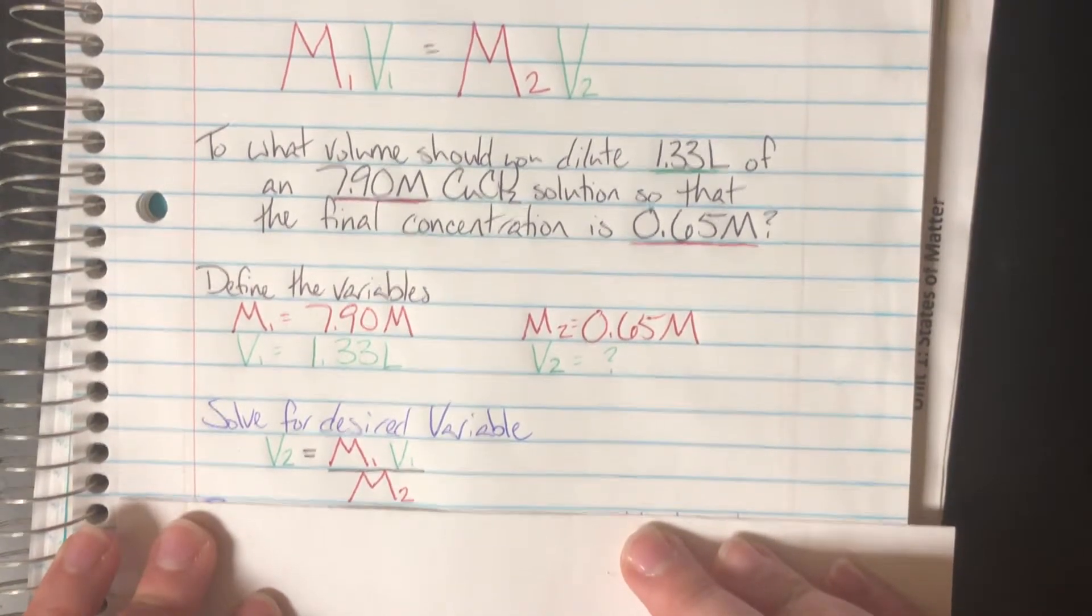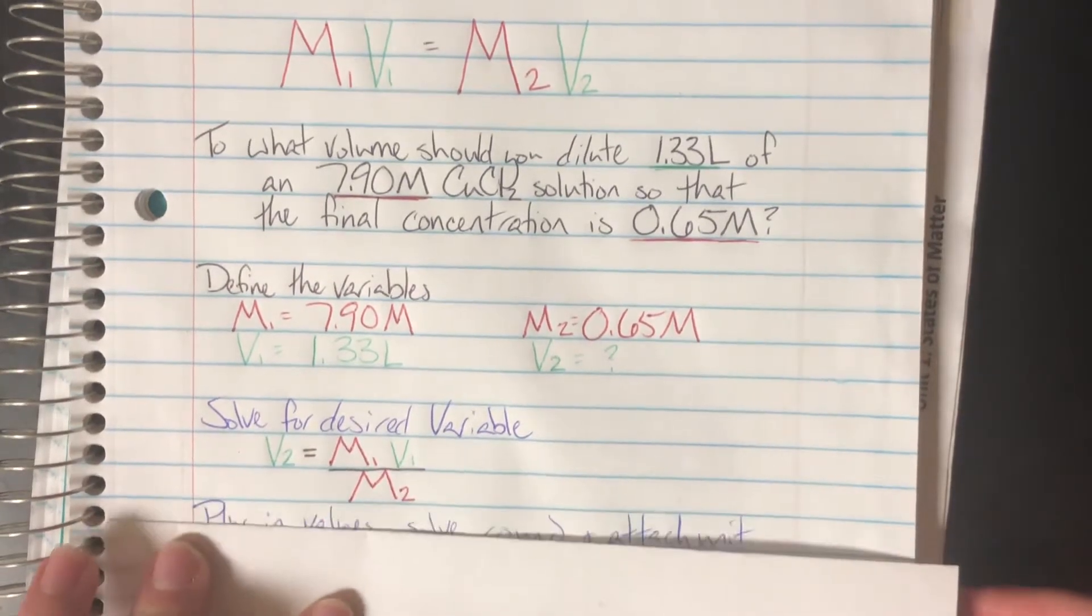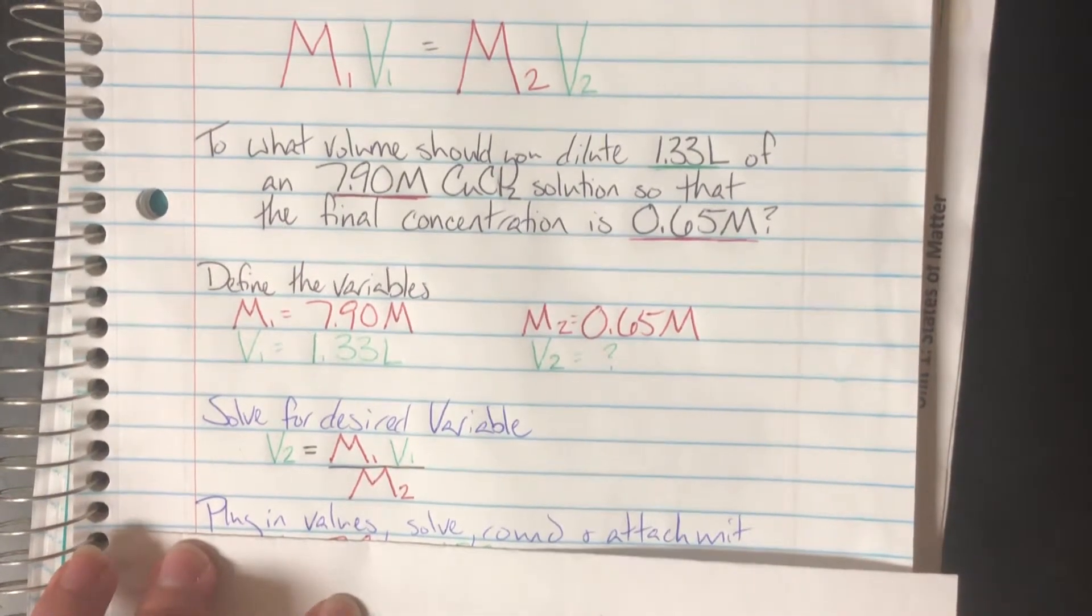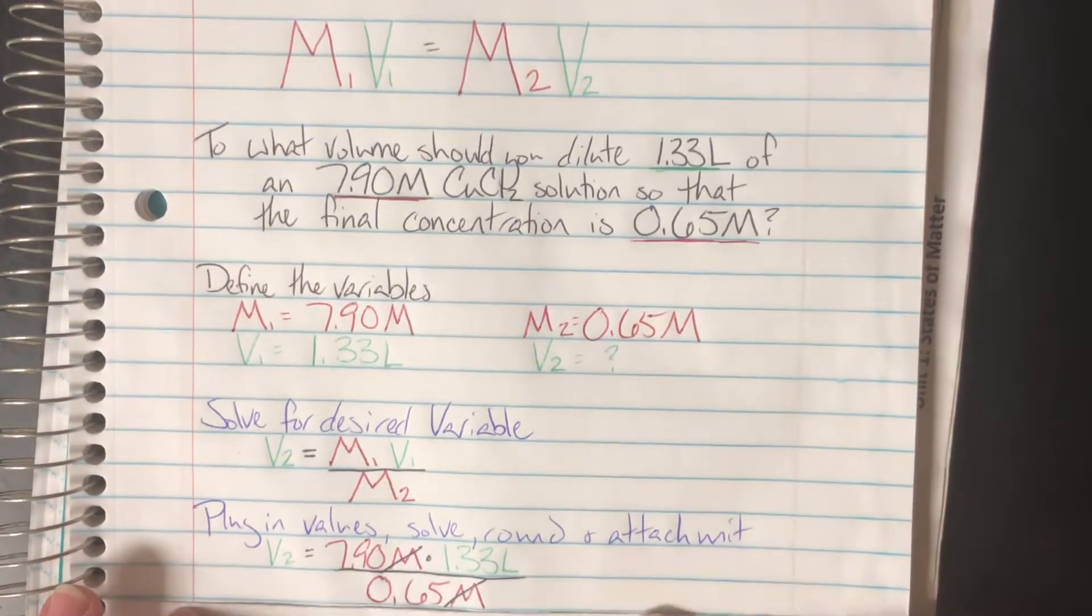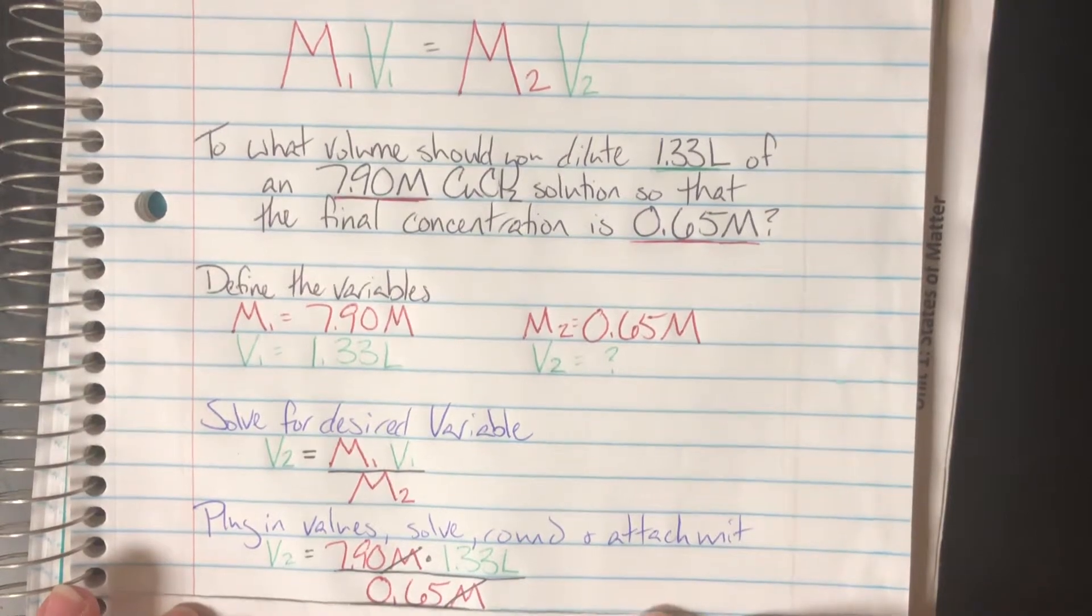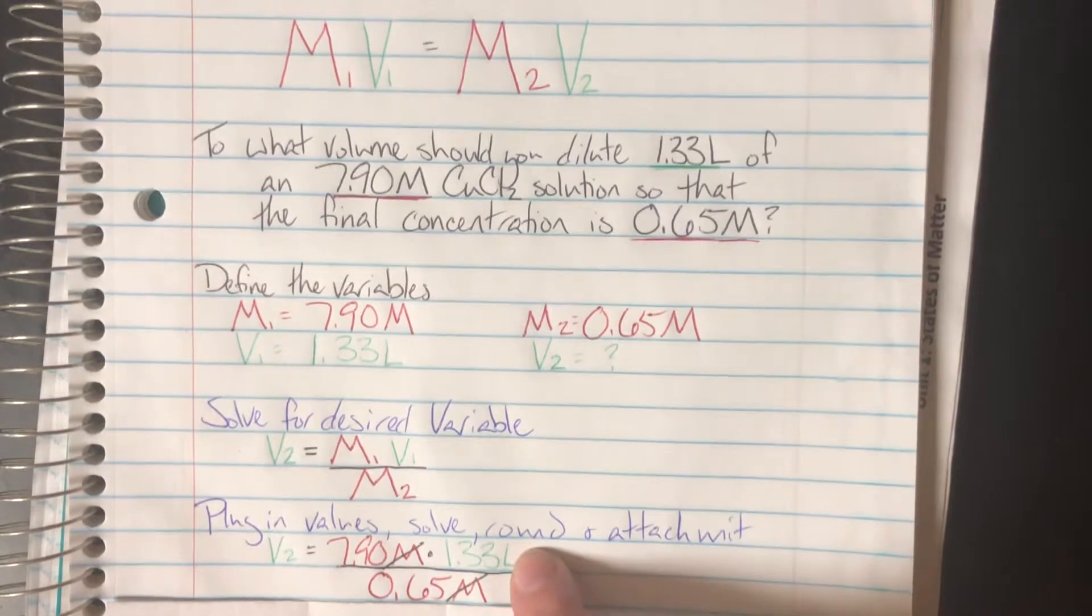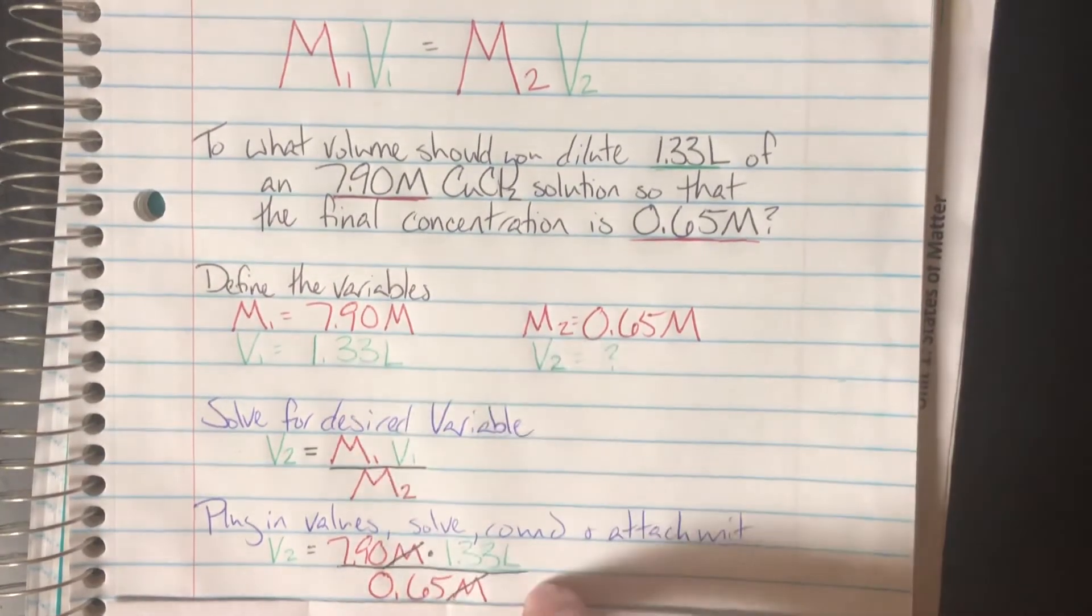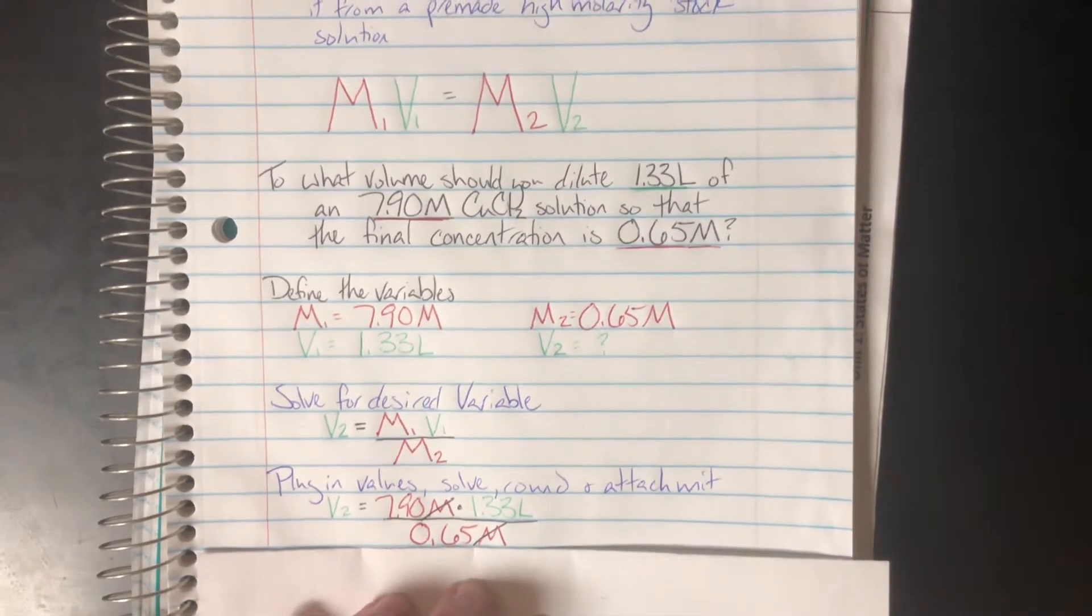Once I have everything defined, I have my equation isolated, I can go ahead and plug everything, solve it, round, and attach an appropriate unit. I went ahead and plugged everything in here, I have 7.9 molar, which is going to be my M1, multiplying by my V1, and I'm dividing by my M2, and that will give me a number.